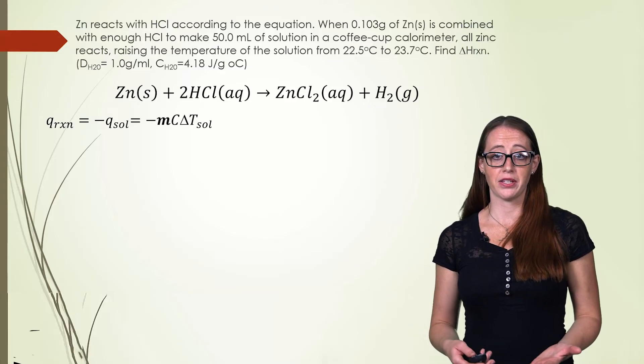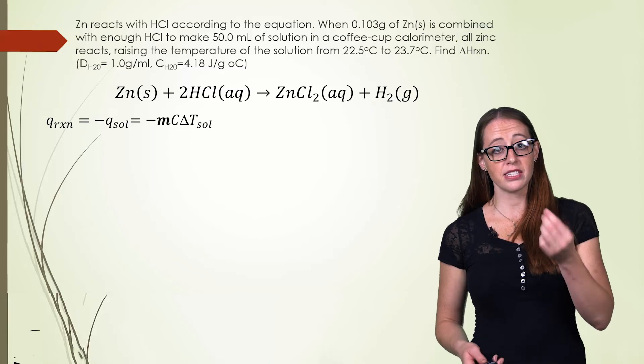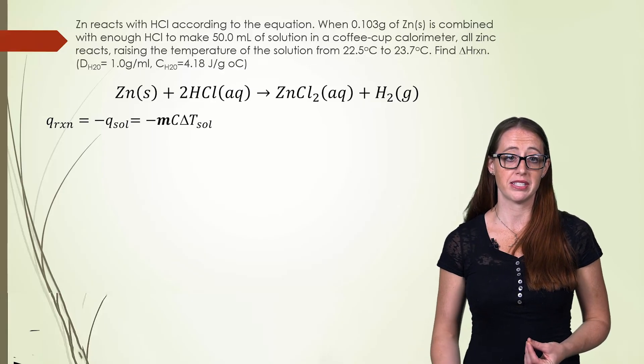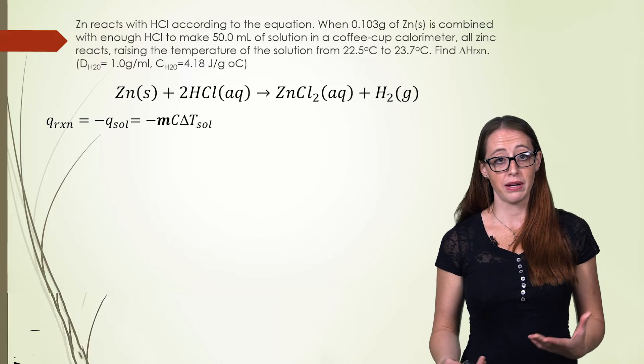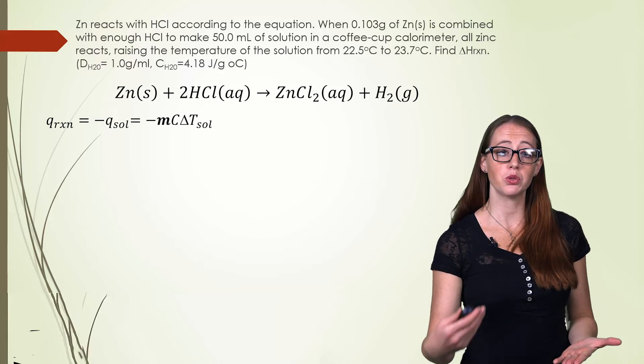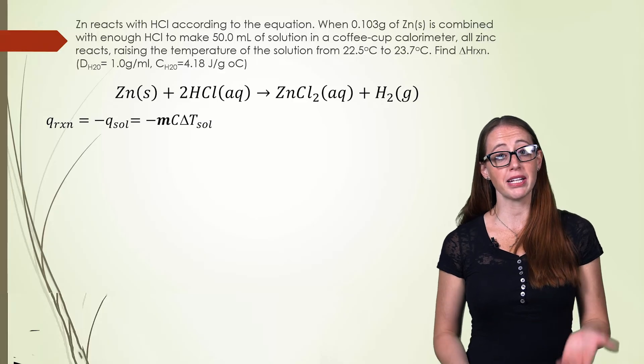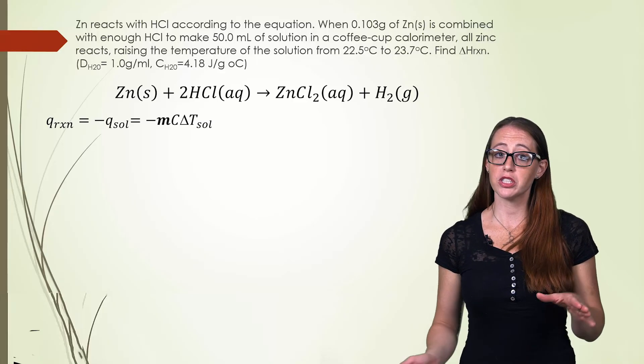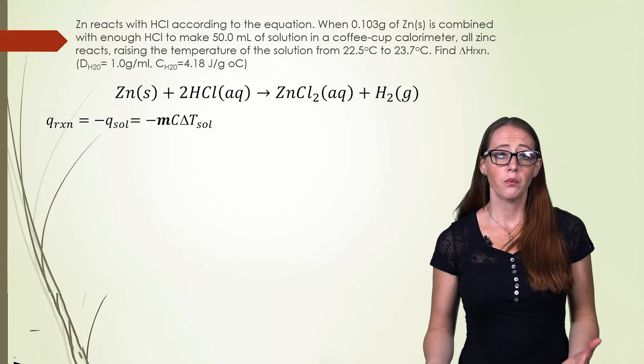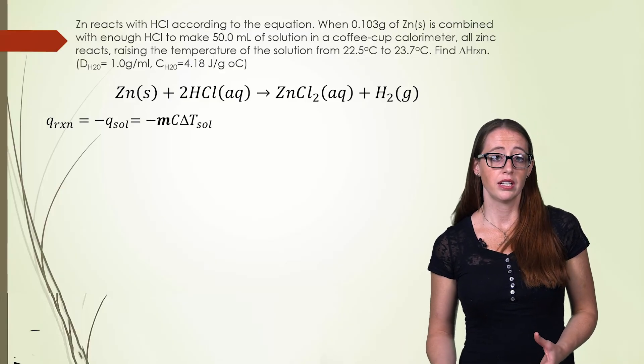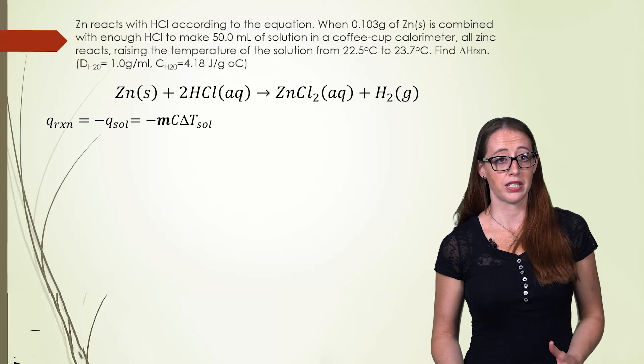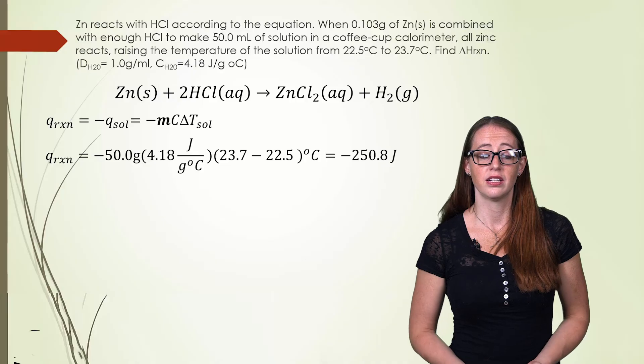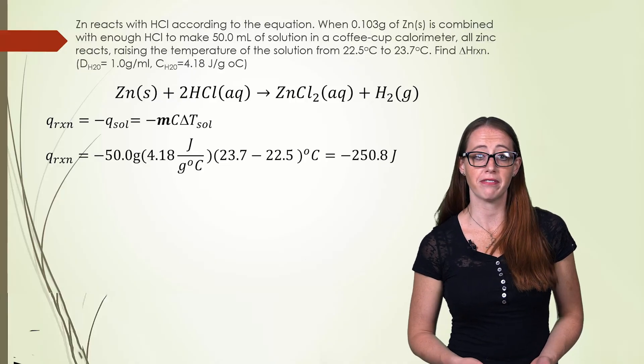From here, we can fill in our values. For the M, this is of the solution. So we are going to fill in the 50.0 mL. However, 1 mL is equal to 1 gram, and so our 50 mL becomes 50 grams. For C, we're talking about the solution. We can assume that's going to be the same as for water, and so we can fill in the C for water. And then finally, the delta T of the solution, which gives us the 23.7 minus the 22.5.